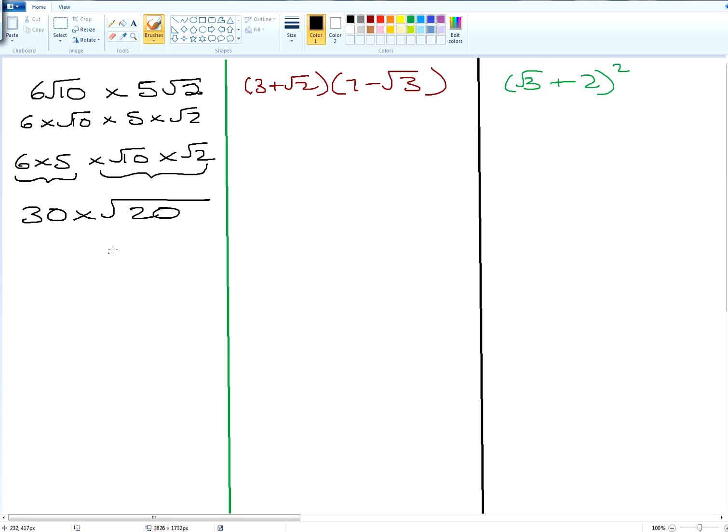Now in root 20 do we have any square numbers? 4 and 5. So that gives you root 4 times by root 5. Now root 4 will give us 2, and root 5 will stay as root 5. So 30 times by 2 will give us 60 root 5. So that's the question all fully explained.